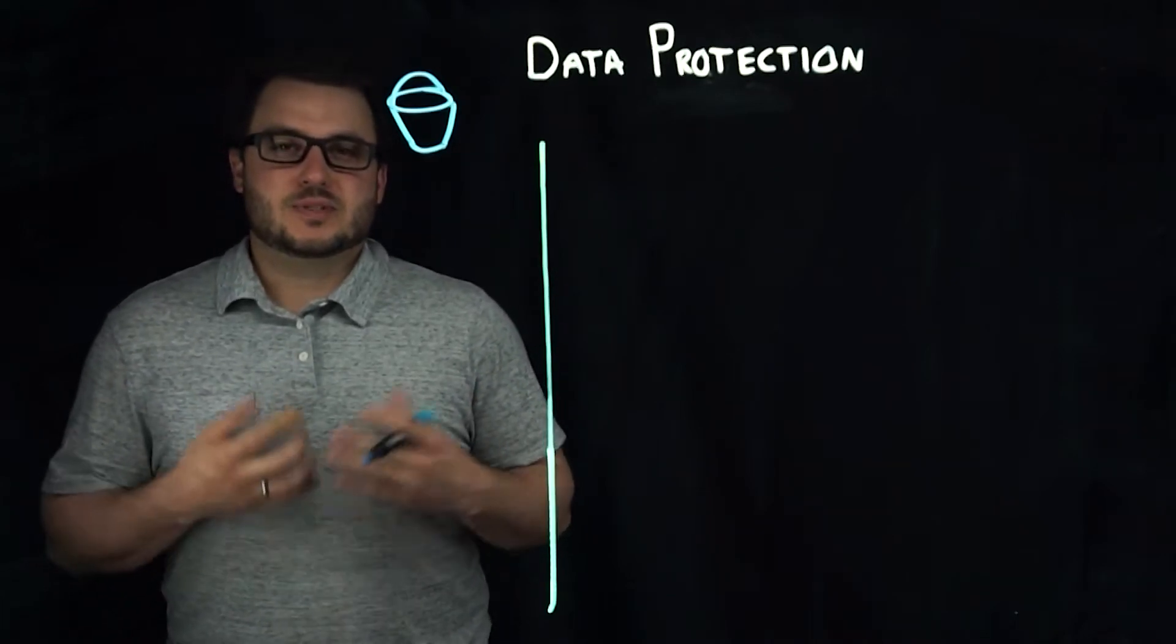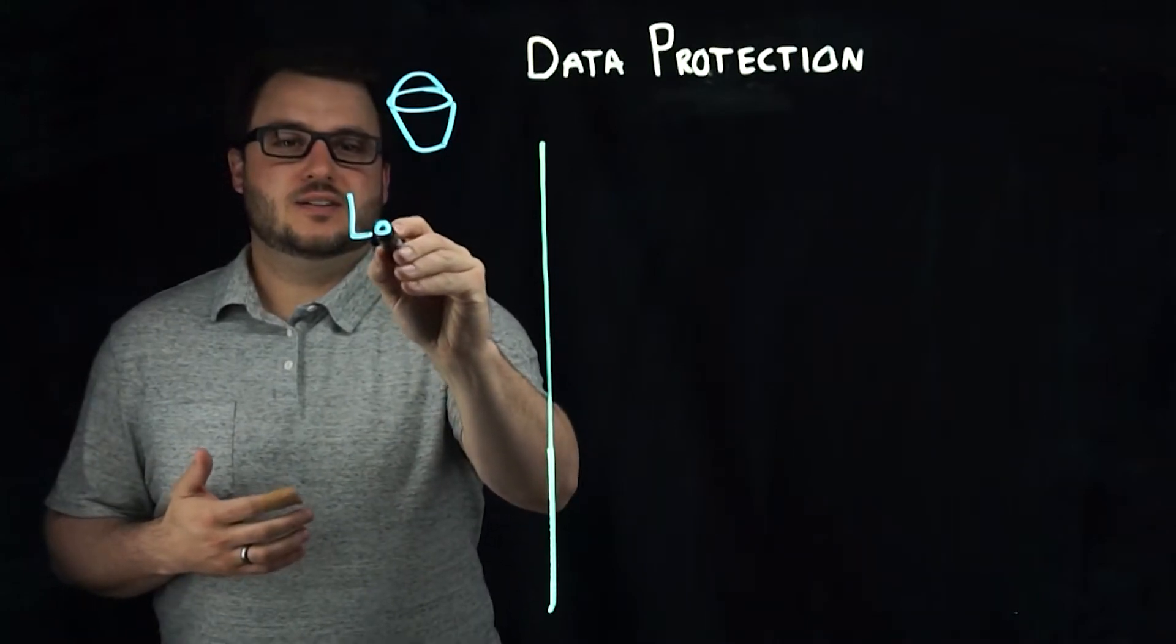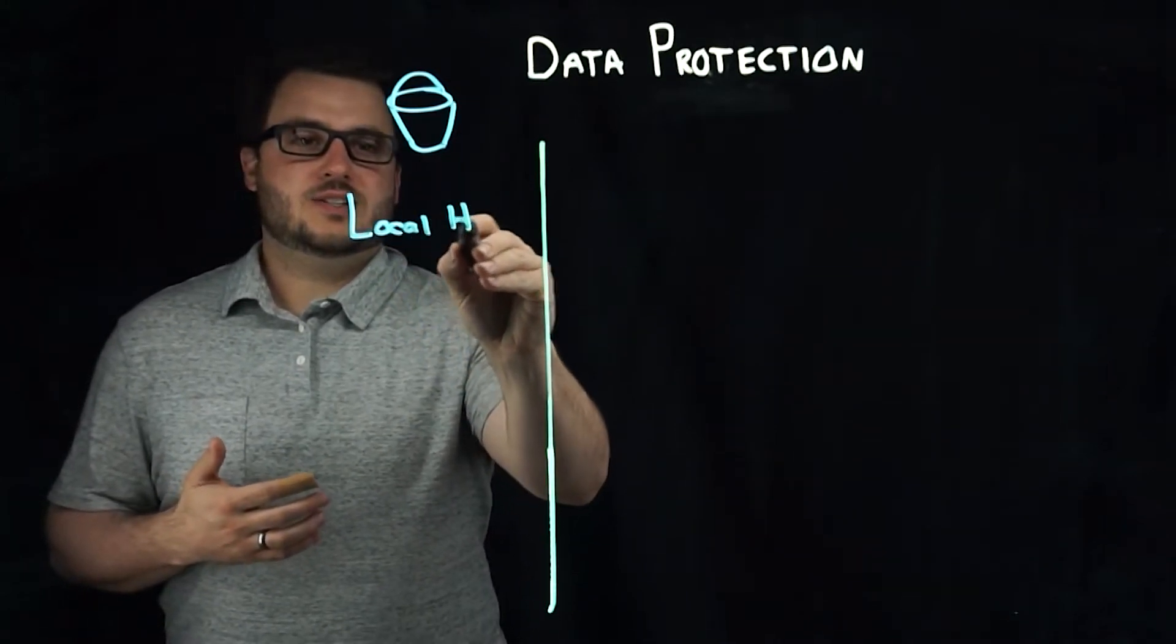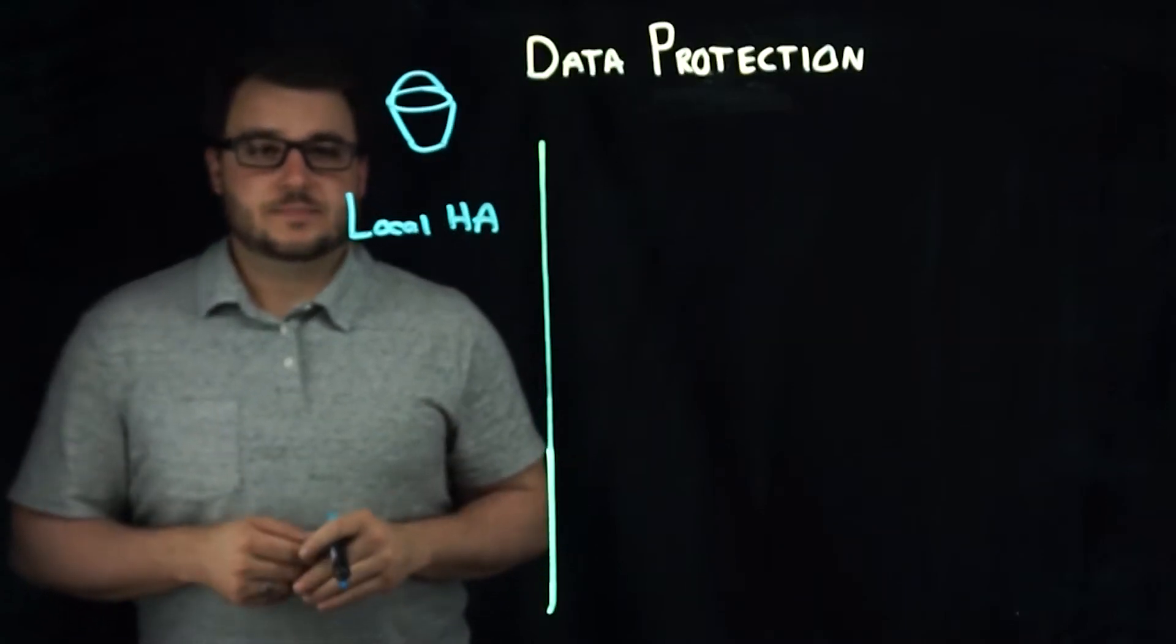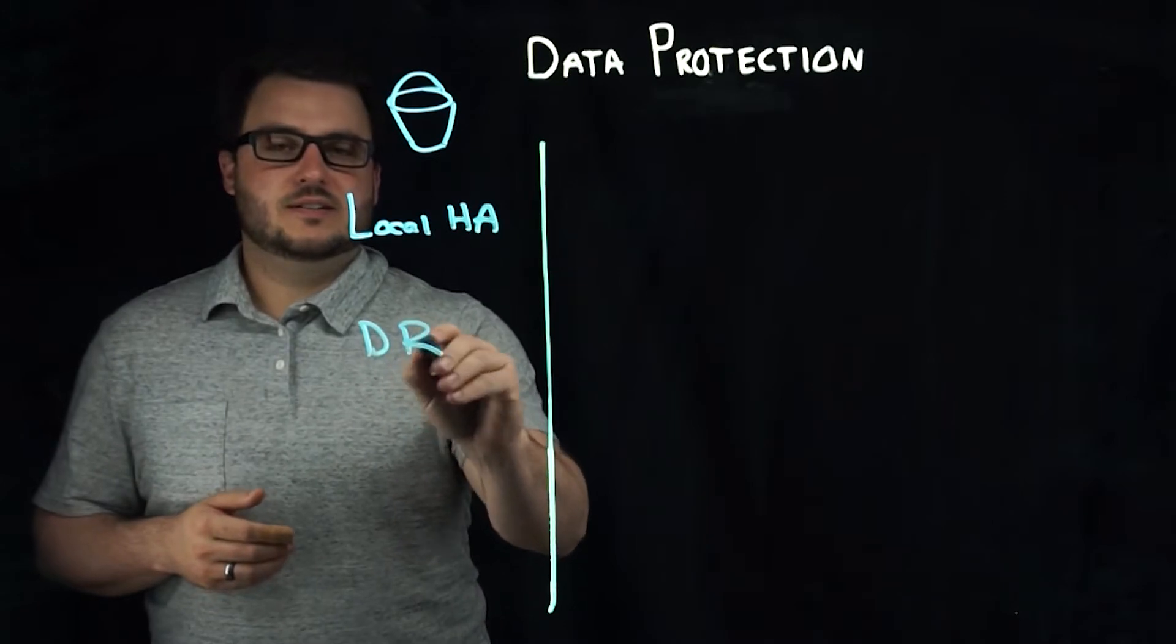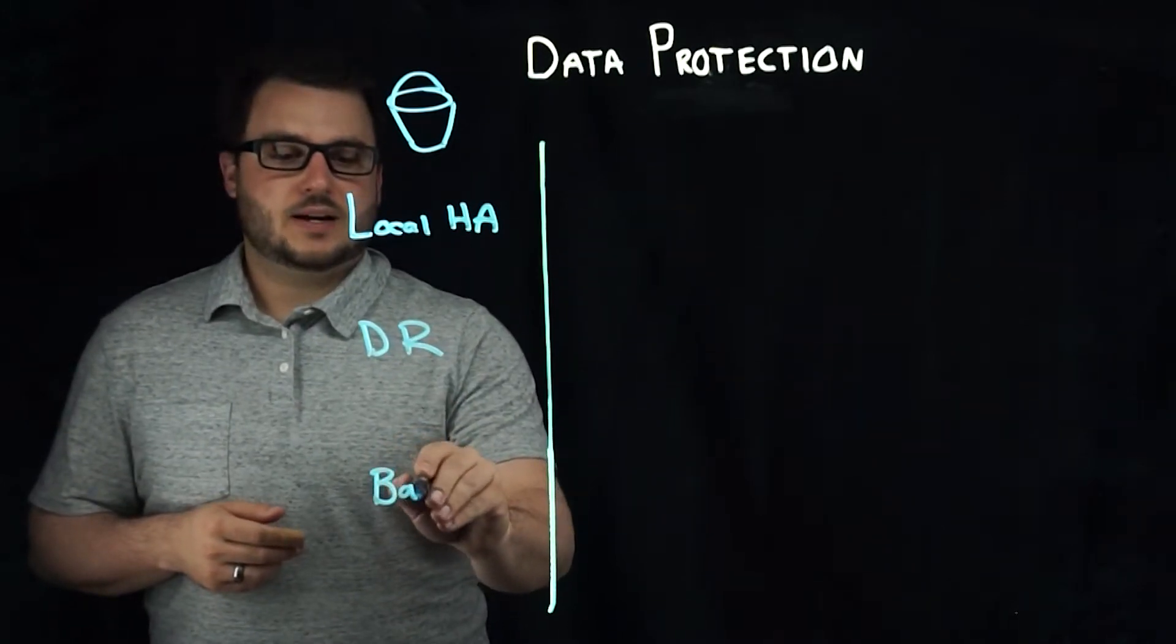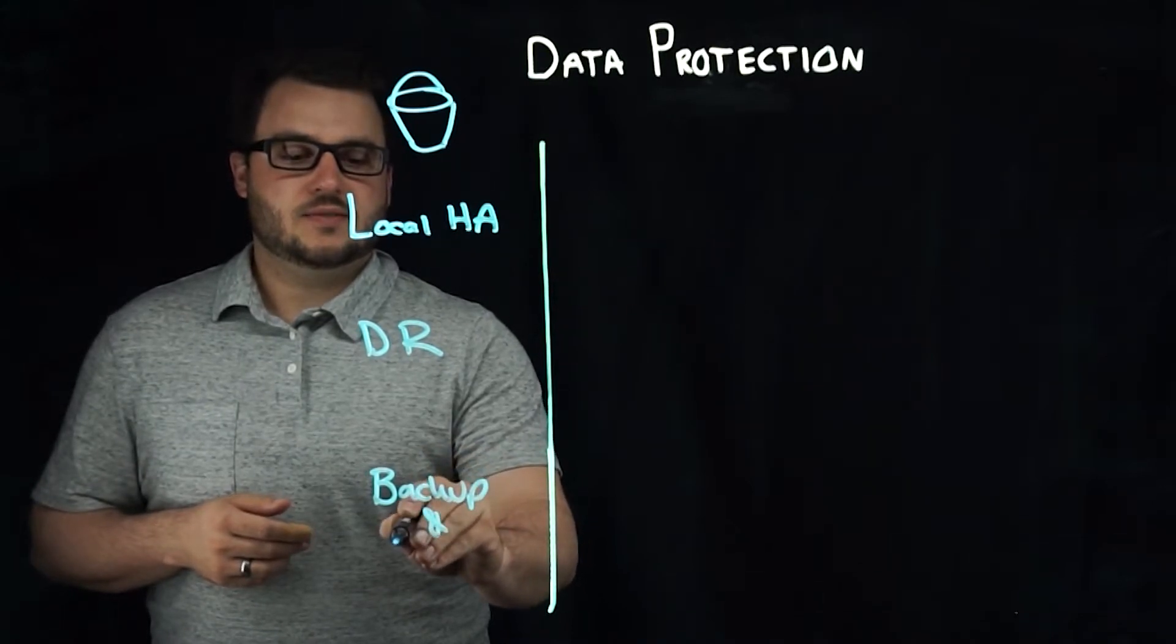When we're talking about data protection, it can mean a lot of things. What we're going to cover today is local HA, and we'll get into what these mean individually, disaster recovery, and backup and restore.